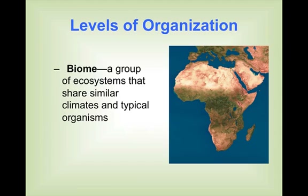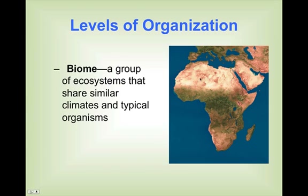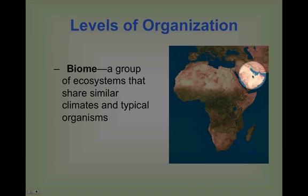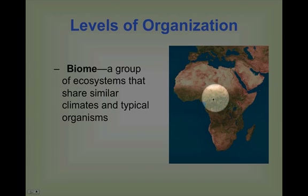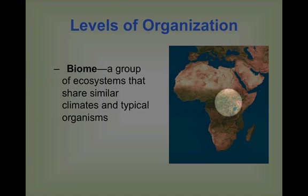If we continue going to a larger scale, we hit a biome, which is a group of ecosystems that share similar climates and typical organisms. We can see the Sahara Desert — a large desert across North Africa — joined with other deserts. This is a very clear biome. Going south toward where the Congo is, that's another line of biomes. Each one of those is a grouping of ecosystems, and you can be fairly certain that ecosystems within the same biome will be similar to one another.